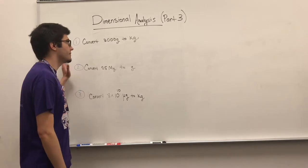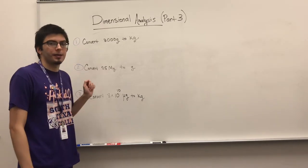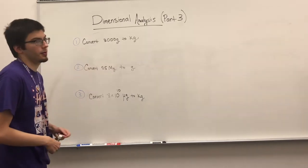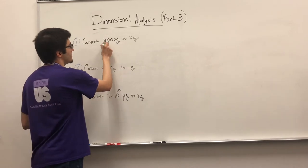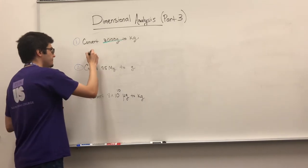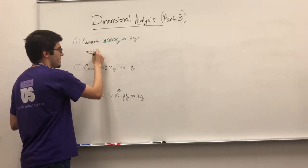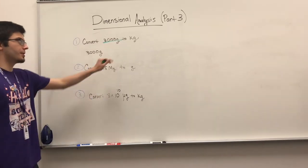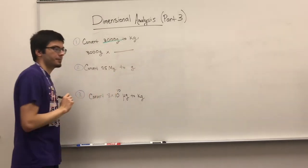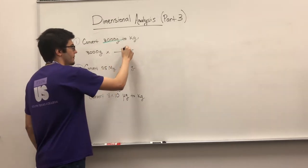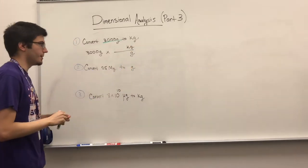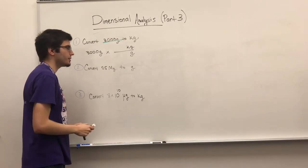We have three examples. Let's do the first one: convert 3000 grams to kilograms. First, acknowledge what you're given — you're given 3000 grams. You're going to multiply by the conversion factor. We want kilograms on top and we need to cancel out grams, so grams goes on the bottom.